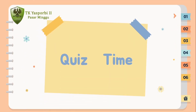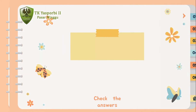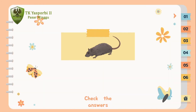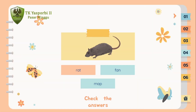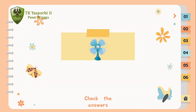Next, we have quiz time. Okay, let's guess what is the picture. What is this? The options are Red, Fan, Map. And the correct answer is Red. Next, what is this? Red, Fan, Map. And the correct answer is Fan.